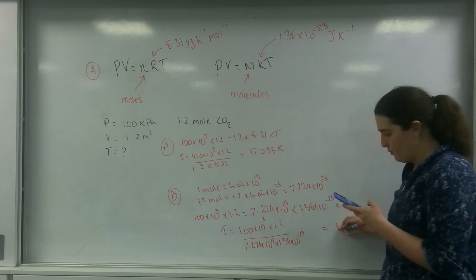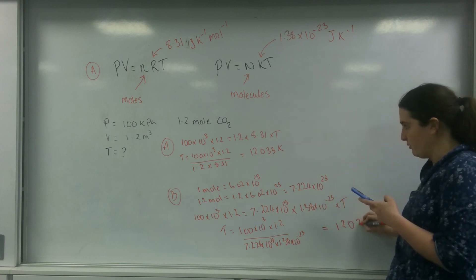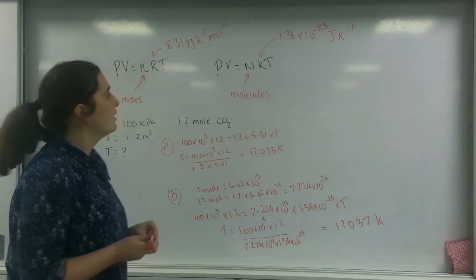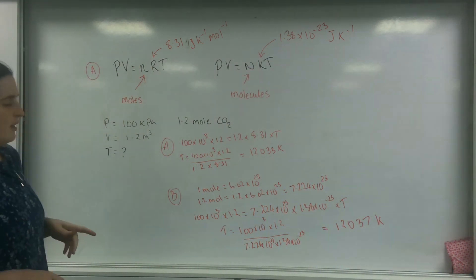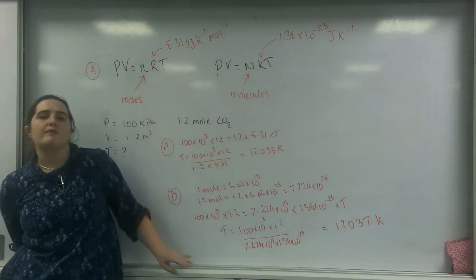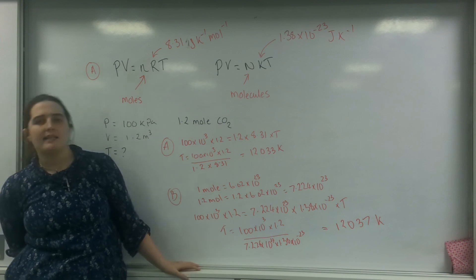So I'm going to put that in, times by 1.38 times 10 to the minus 23. And I get an answer of 12,037 Kelvin. So I've got a slight discrepancy there. But of course, this is to do with the significant figures of the numbers, the rounding, etc.